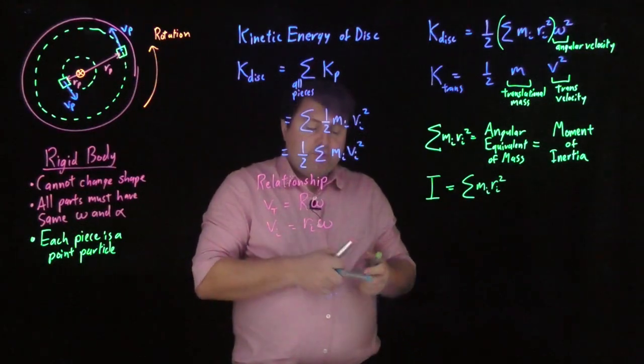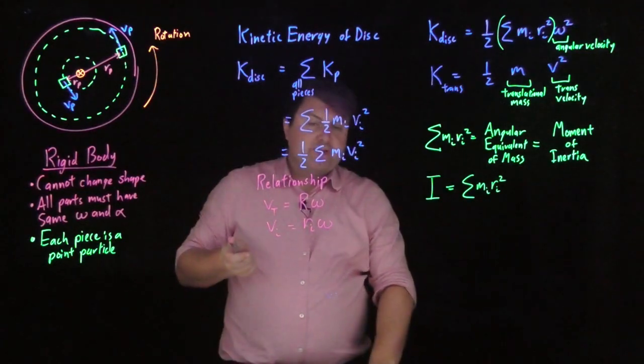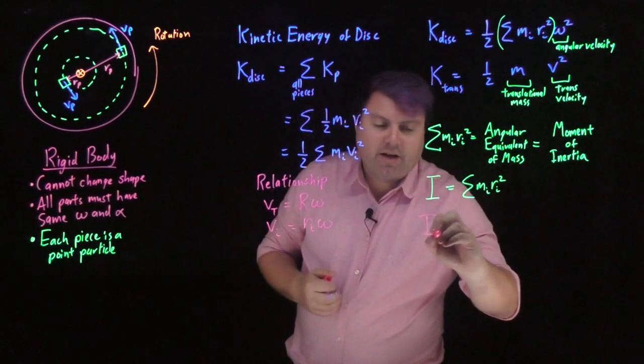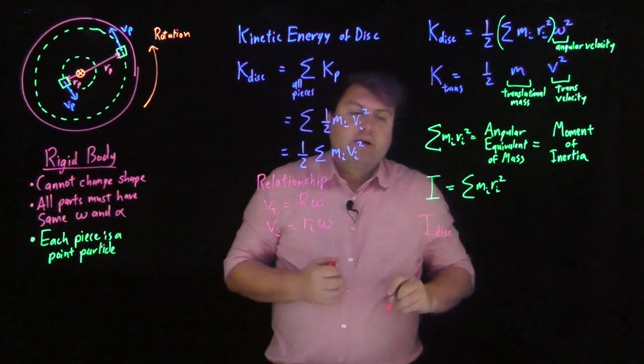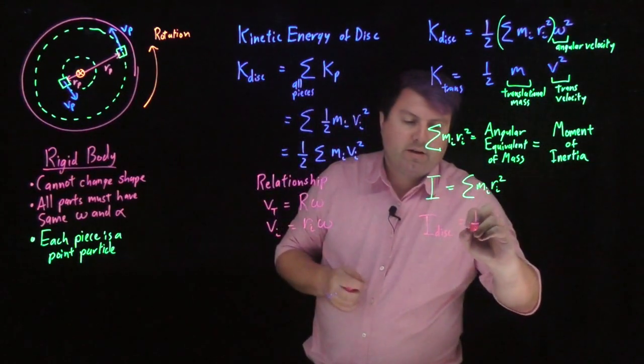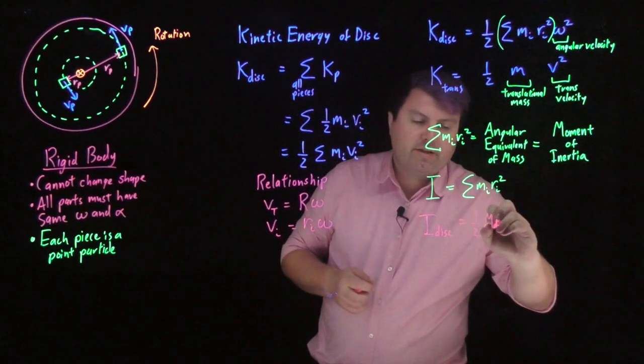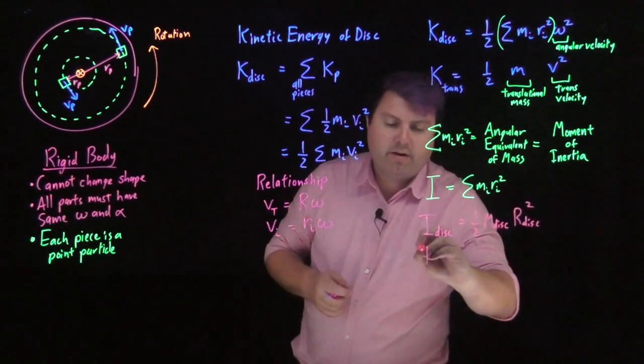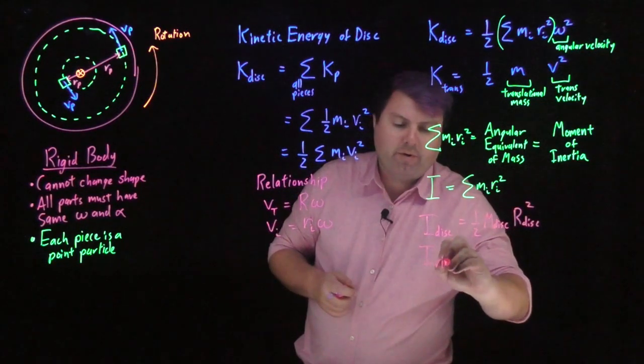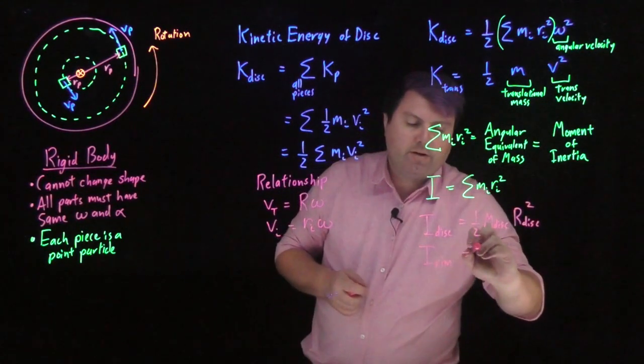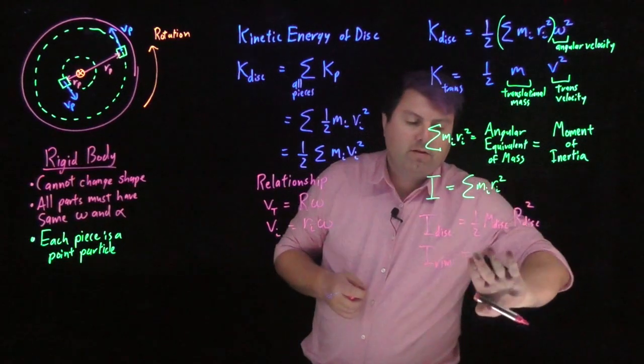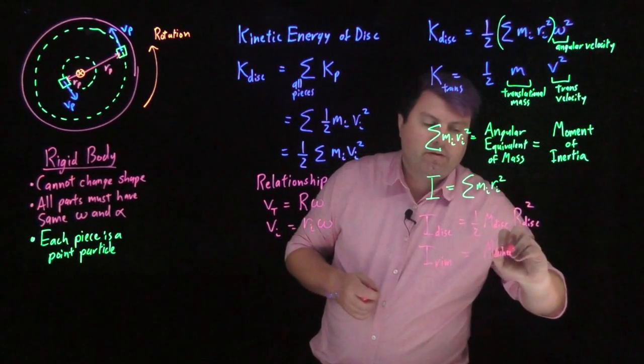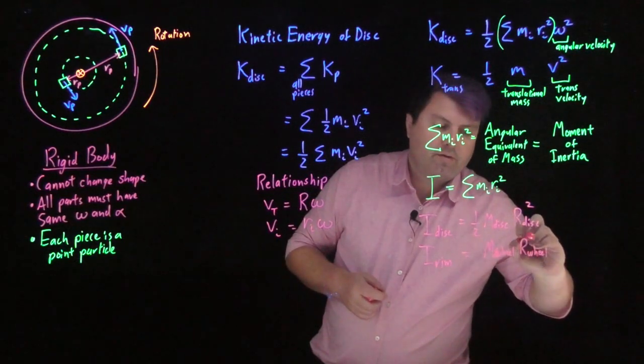How do we calculate this? We would have to actually take a real sum or a real integral. But luckily for us, they've been done a number of times. So the moment of inertia for a disk is one-half the mass of the disk times the radius of the disk squared. The I for a rim, a rimmed wheel, is just one times the mass of the wheel, the radius of the wheel squared.